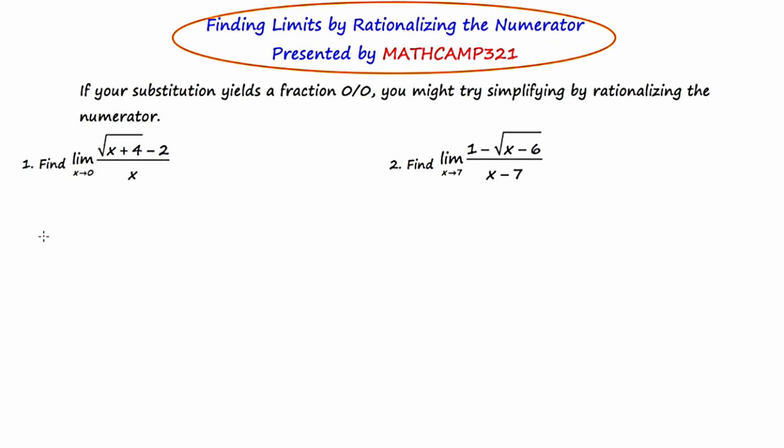We're going to end up getting the square root of 0 plus 4 minus 2 all over 0. Now the square root of 4, 0 plus 4 is 4 and the square root of 4 is 2. So the numerator is really 2 minus 2. And in the end, we have 0 over 0. And overall, what this means is that we have to try something else. So I'm going to erase that because it's my scratch work and it's getting in the way.